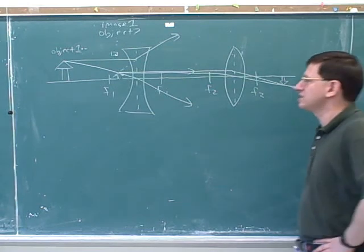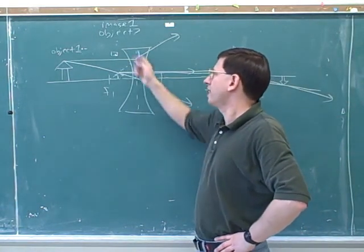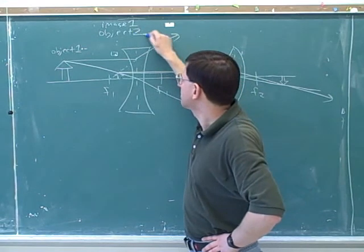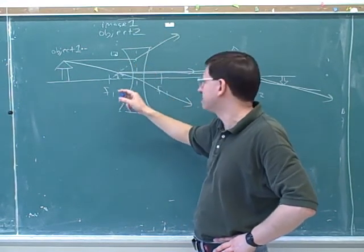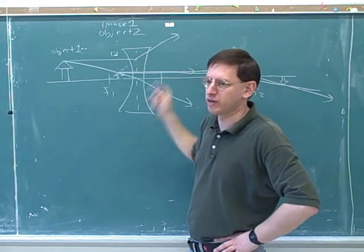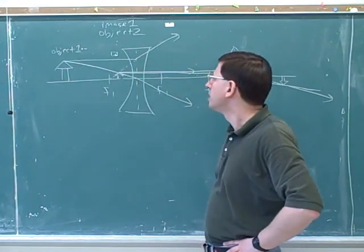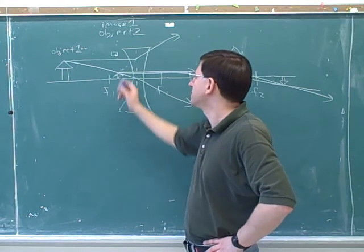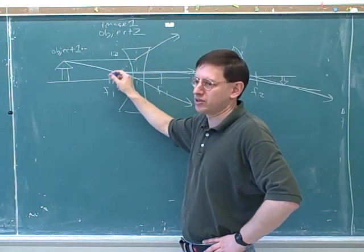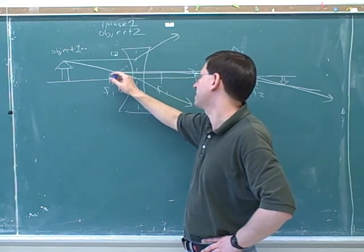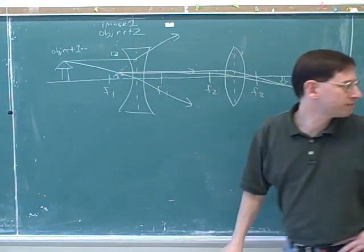So the one tricky thing is: you use the first lens to determine where the object is for the second lens, and then you ignore the first lens and just pretend as if the light was just going straight through it. We already used this lens to figure out where this object was. Something very helpful is to label this as the image from lens one and the object for lens two. Then this image becomes the object, and we just draw the P and M rays just as we would have before.